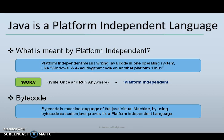Sun Microsystems' slogan was WORA — Write Once, Run Anywhere. The same Java application or algorithms, when compiled to Java bytecode and packaged in a .jar file, will run identically on Windows and Linux. Bytecode is the machine language of the Java Virtual Machine. Java bytecode is the result of the compilation of a Java program — an intermediate representation of that program which is machine-independent.